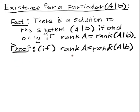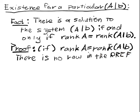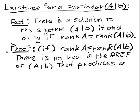Well, so if the rank of A is equal to the rank of B, then there is no row in the reduced row echelon form of A augmented with B that produces a zero is equal to one situation. So we don't break arithmetic.